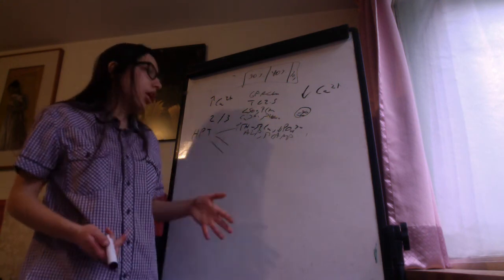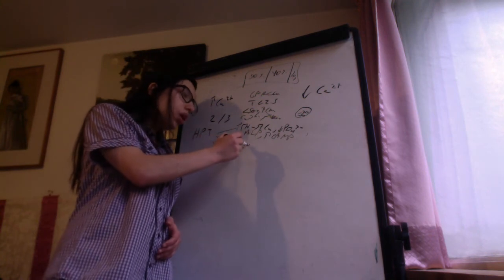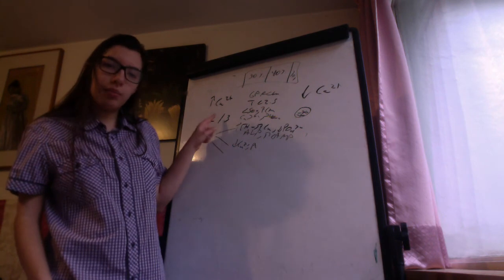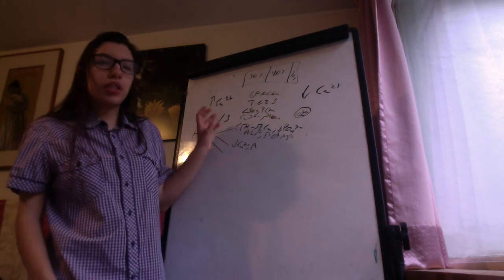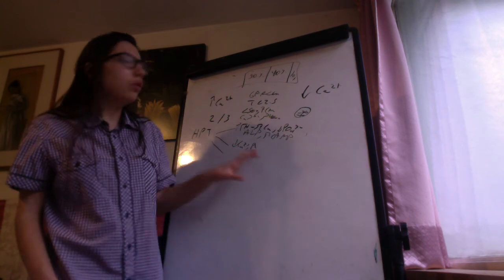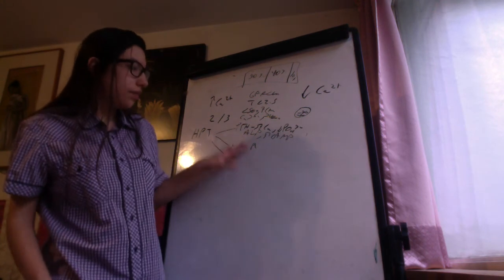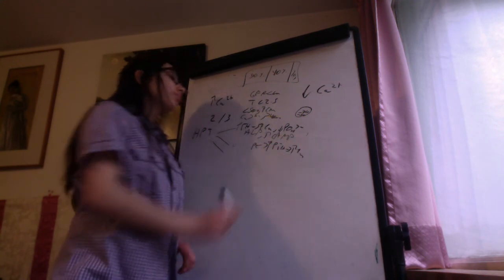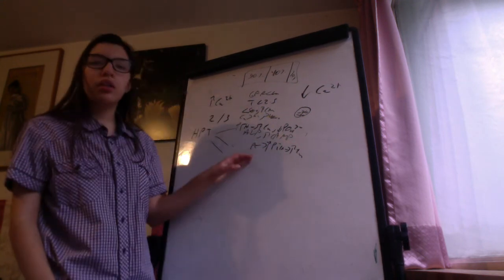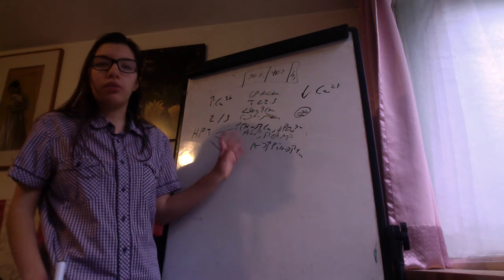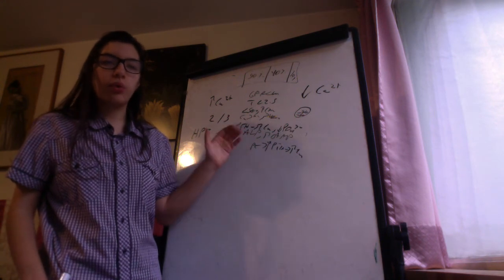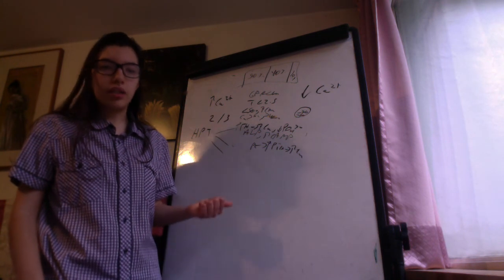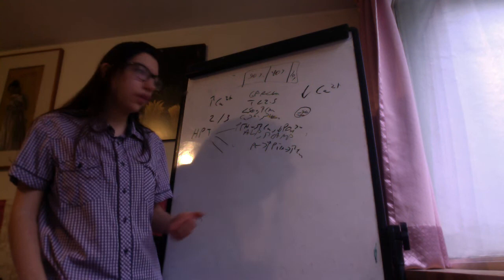Secondary hyperparathyroidism is due to decreased calcium or increased phosphate. Because we are talking about hypercalcemia here, this would be secondary hyperparathyroidism due to increased phosphate — the increase in phosphate leads to increase in PTH, and the increase in PTH leads to hypercalcemia. Treatment is to reduce phosphate absorption using sevelamer or lanthanum carbonate, which are resin ion exchangers that inhibit phosphate absorption in the gut.